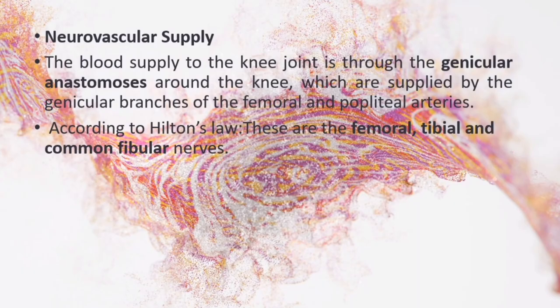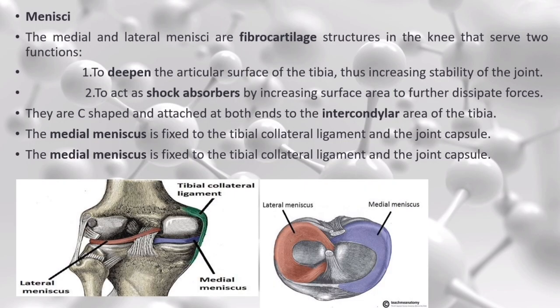Neurovascular supply. Blood supply to the knee joint is through the genicular anastomoses supplied by genicular branches of the femoral and popliteal arteries. Nerve supply, according to Hilton's law, is by nerves supplying muscles that cross the joint: the femoral, tibial and common fibular nerves. The medial and lateral menisci are fibrocartilage structures serving two functions: to deepen the articular surface of the tibia increasing stability, and to act as shock absorbers. They are C-shaped and attached at both ends to the intercondylar area of the tibia. The medial meniscus is also fixed to the tibial collateral ligament, so damage to that ligament usually results in a medial meniscal tear.